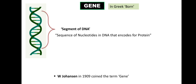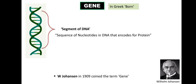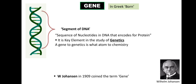Wilhelm Johannsen, a Danish pharmacist, botanist, plant physiologist, and geneticist, first coined the term 'gene' in 1909. He worked on botany and genetics throughout his lifetime and is best known for coining the terms gene, phenotype, and genotype.